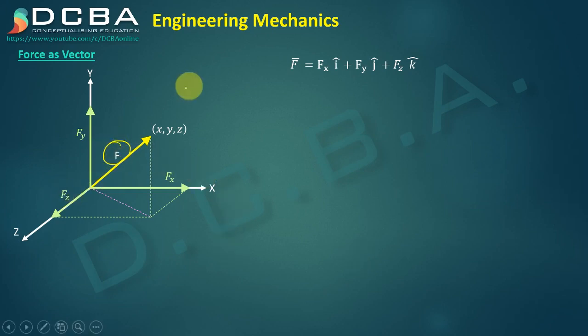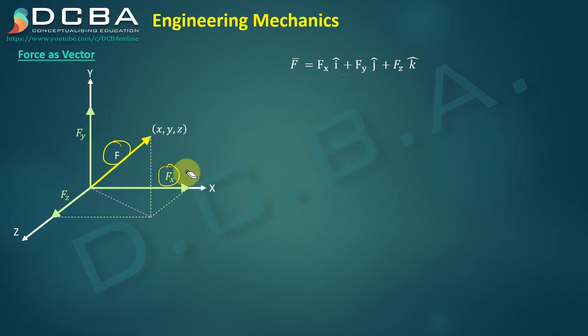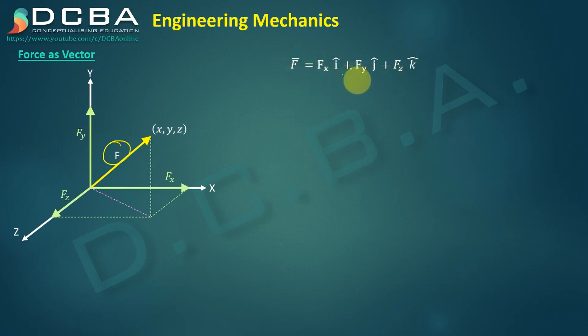The way to represent force F in vector form is: F vector = FX·î + FY·ĵ + FZ·k̂. This is the vector representation in the three-dimensional case — nothing different from the 2D case, just an additional component.